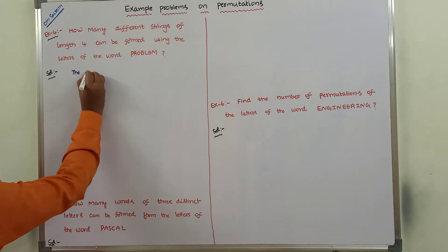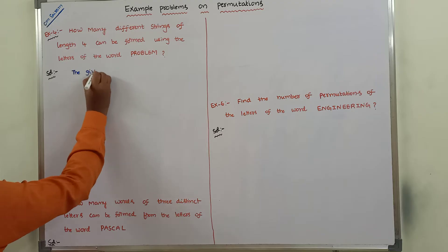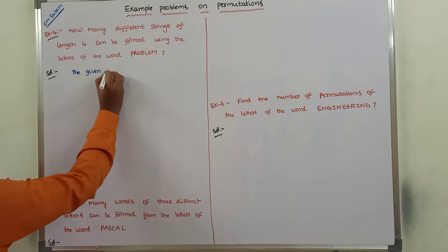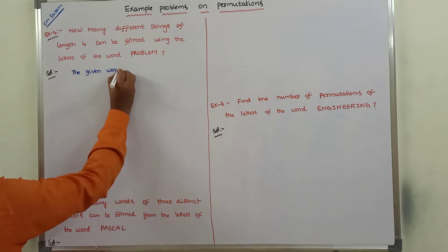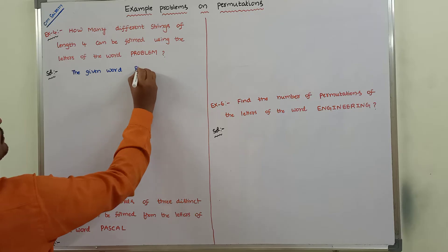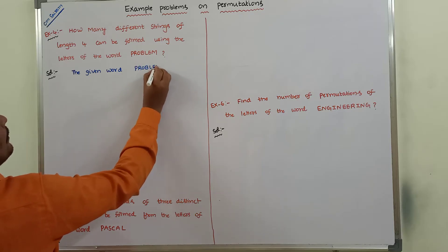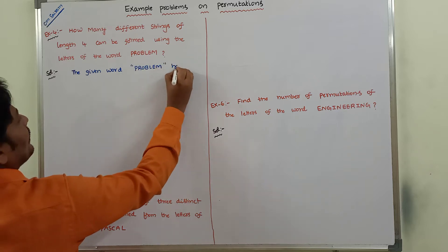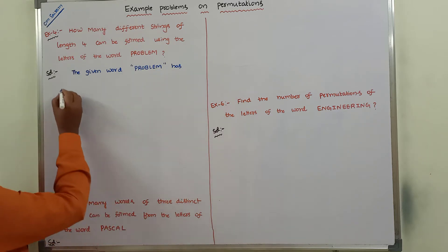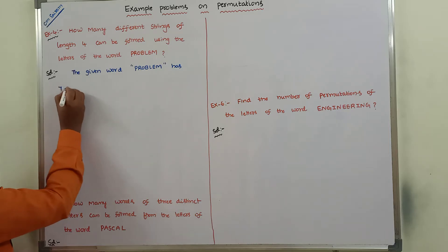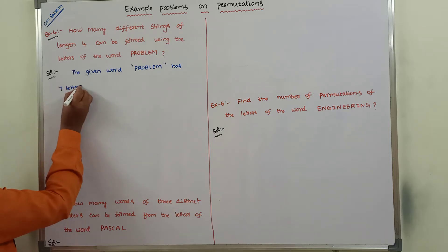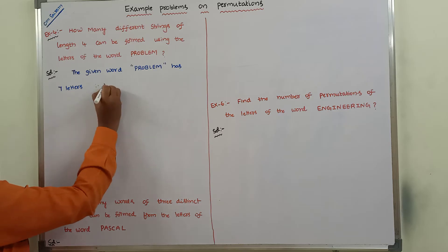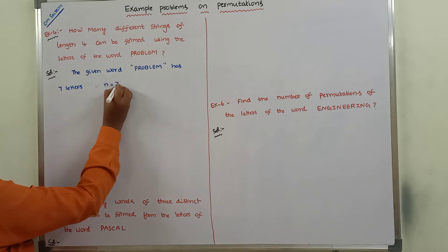The given word PROBLEM has seven letters. Therefore, n is equal to seven.